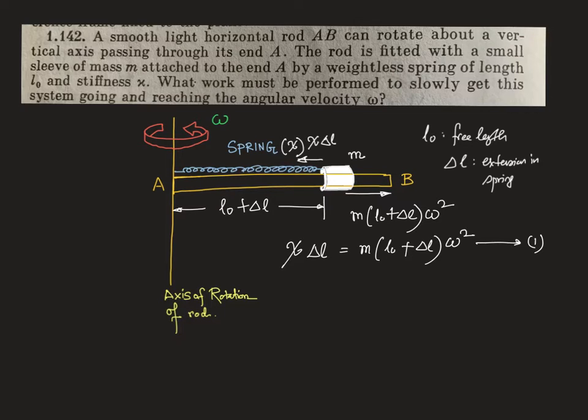So what work must be performed to slowly get this system going? The work performed is equal to the kinetic energy of the sleeve plus the potential energy stored in the spring.